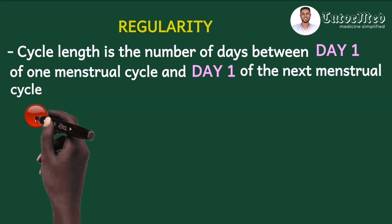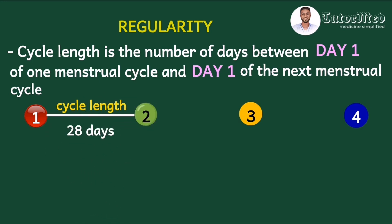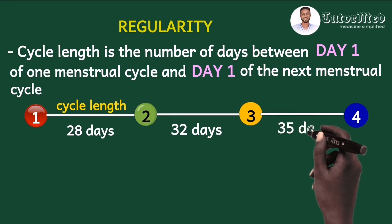For example, consider cycle lengths of 28, 32, and 35 days across consecutive cycles. It is a common error to think that this pattern represents an irregular cycle, because we tend to think the next cycle must also be 28 days to be considered regular. But actually, this is not the case.